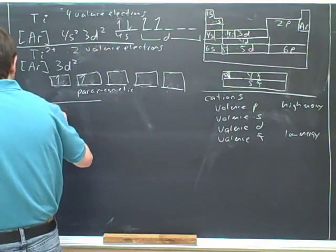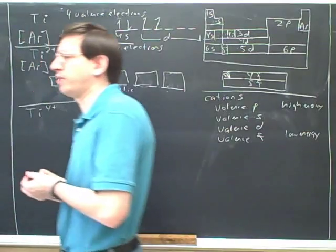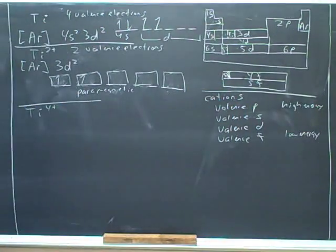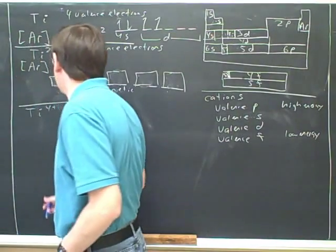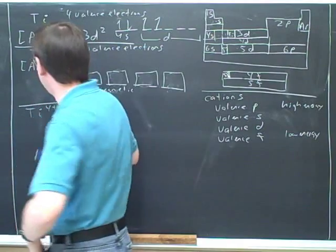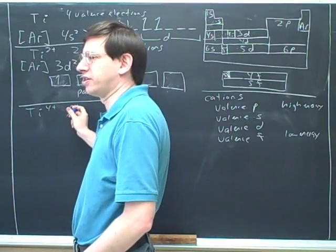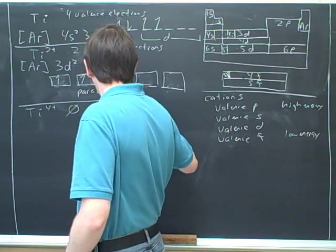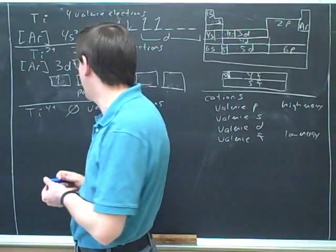What would be the electron configuration for titanium 4 plus? Good. How many valence electrons does titanium 4 plus have? Yeah. So that's the key. Start by asking how many valence electrons there are. Well, this has zero valence electrons because we started with 4 and we took 4 away.